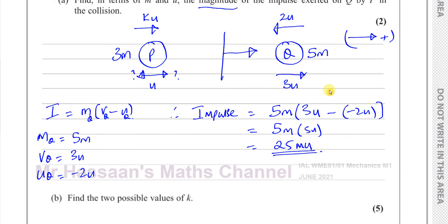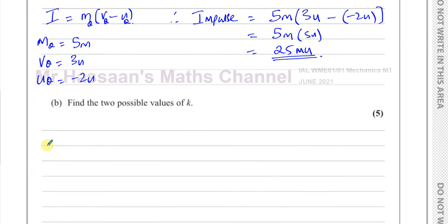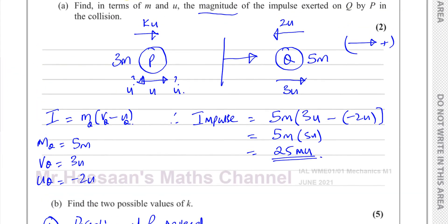For part B, we need to find the two possible values of k. There are two possible values because we don't know what happened to P after the collision — it's either moving at speed u in the original direction, or its direction was reversed. So there are two scenarios: case one where the direction of P is reversed, and case two where the direction of P remains the same.